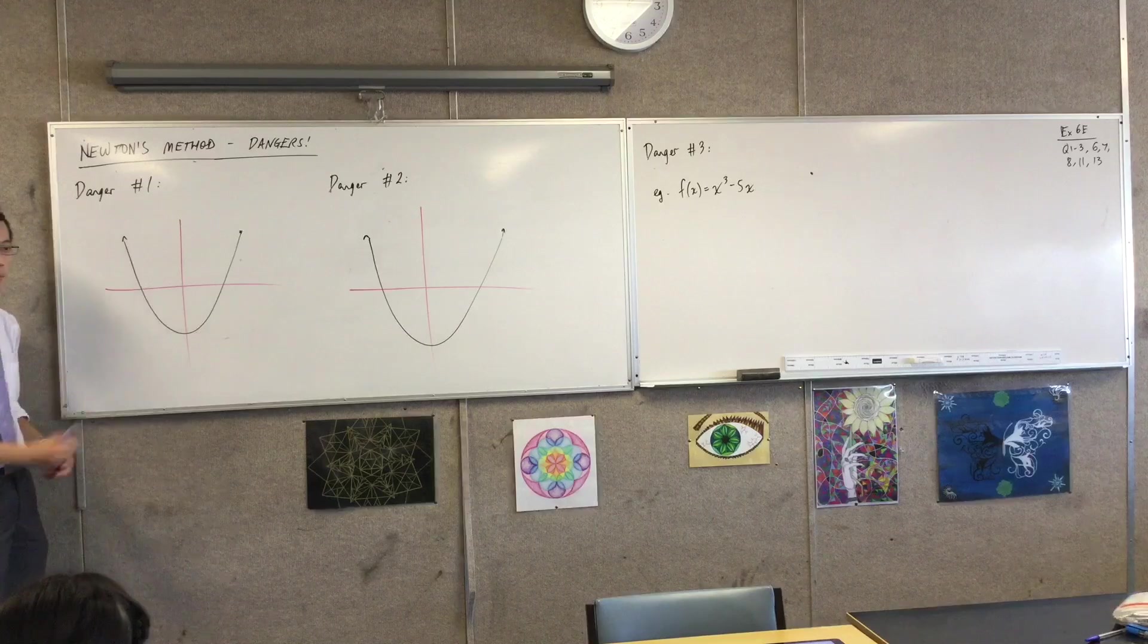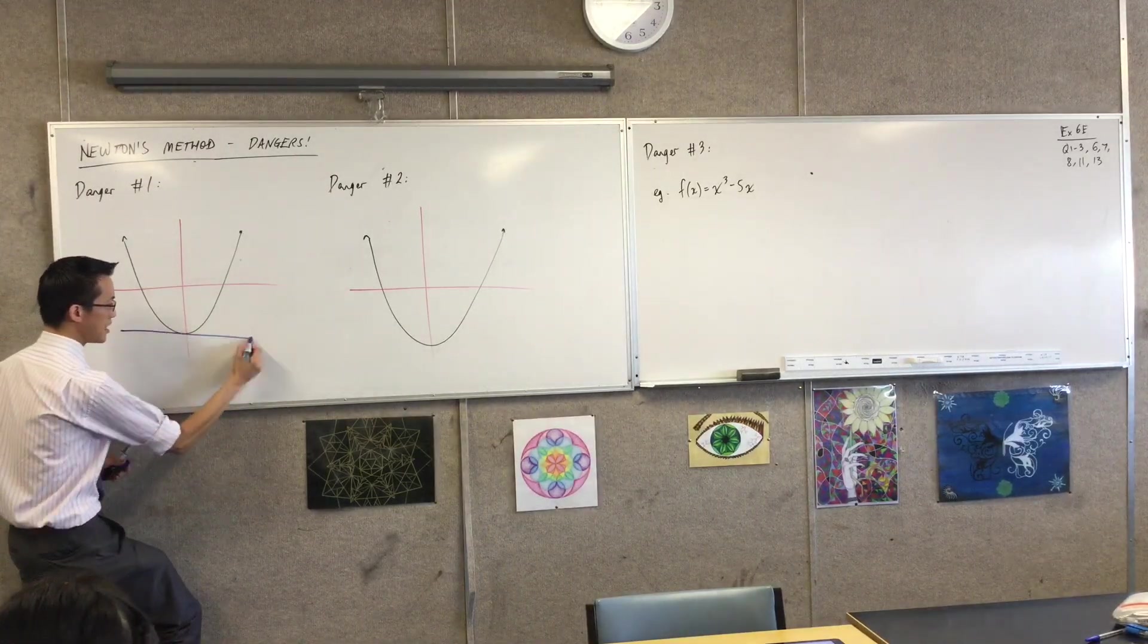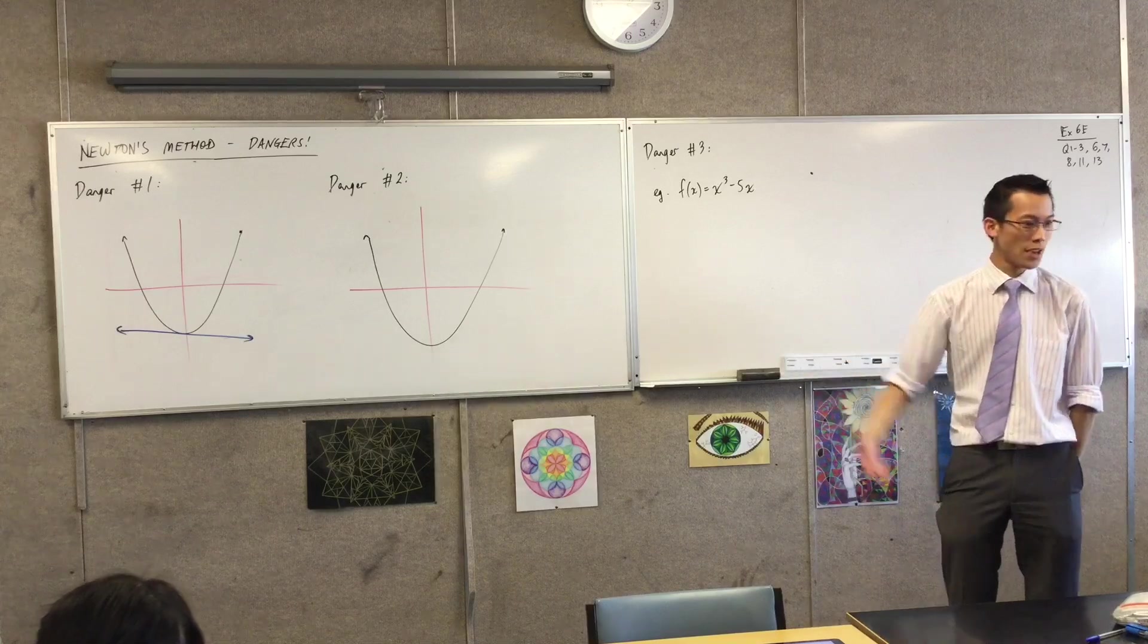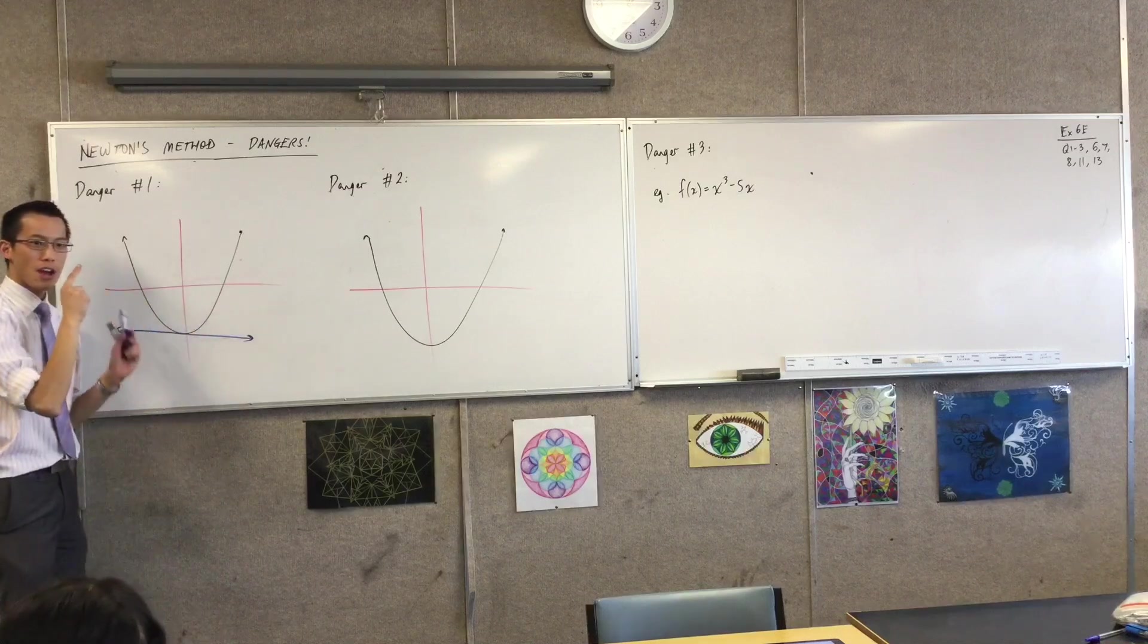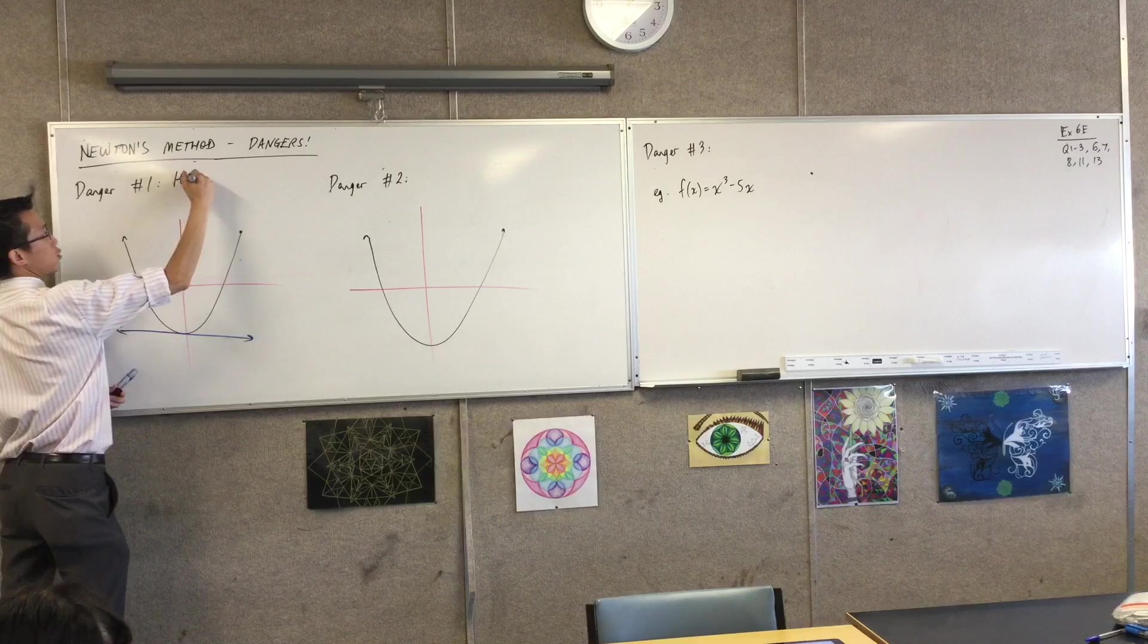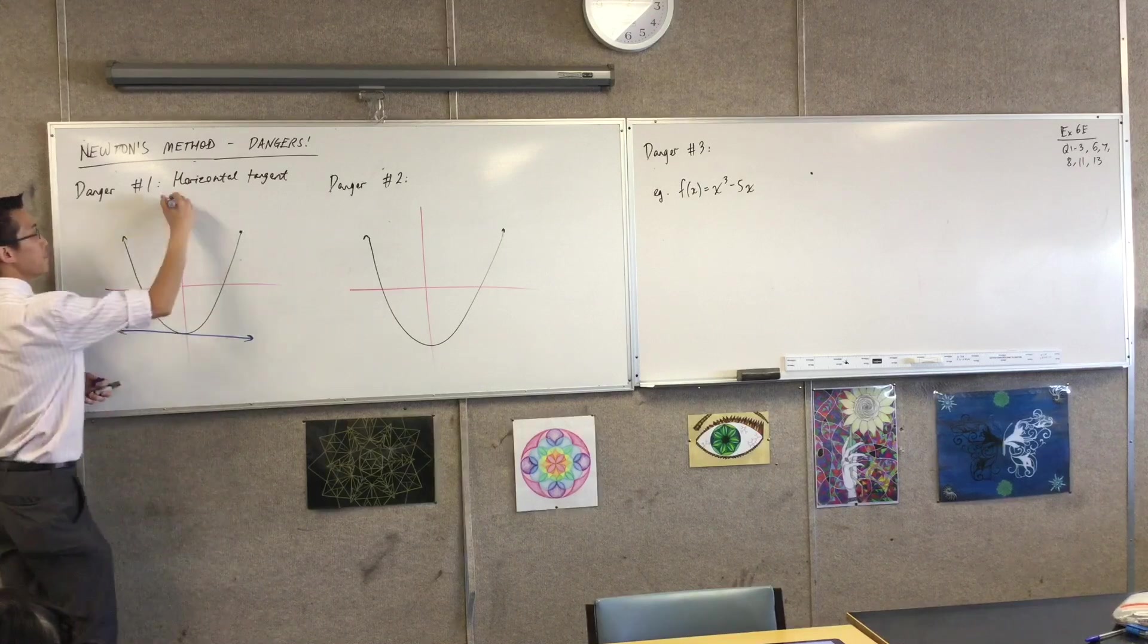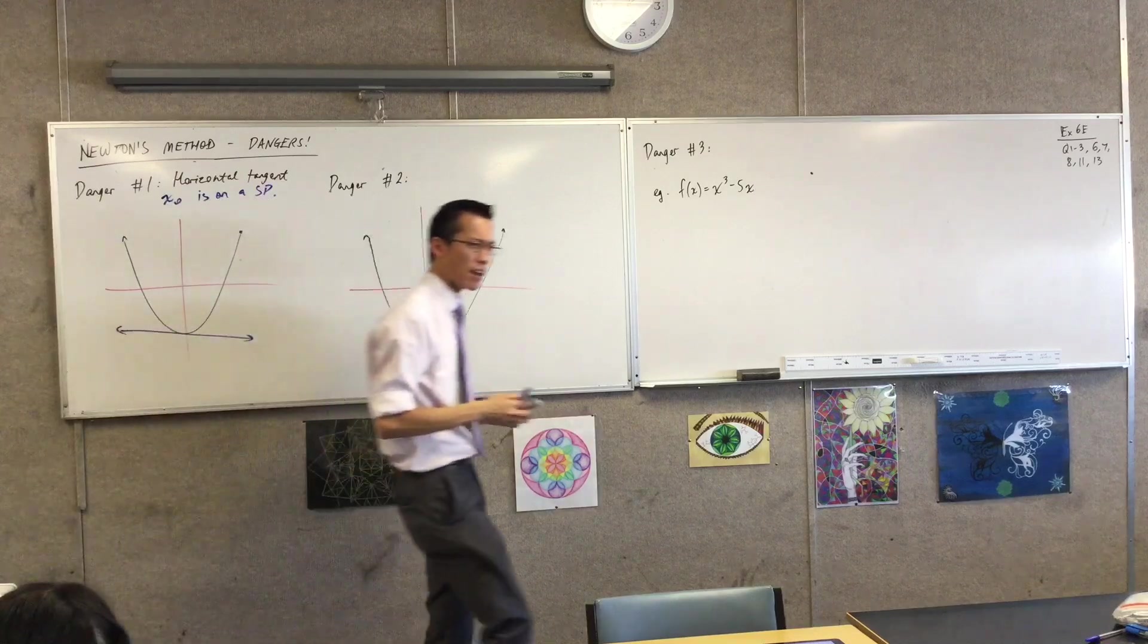I alluded to this one before. Danger number one, if you take x0, and if I have a particular x0, such that the tangent at x0 looks like that, what's the problem? Why is that a problem? There's no x1. There will be no x1, because this guy never intersects with the axis, right? So the problem that causes there to be no x1 is some people call it a horizontal tangent, because that's what it looks like. But more geometrically speaking, the real issue is that x0 is on a stationary point. That's the real issue.